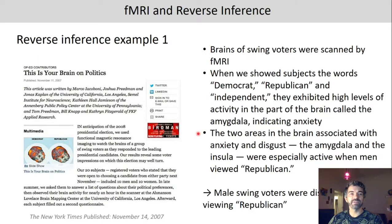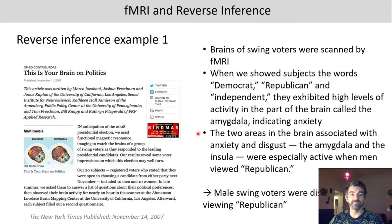I want to give two examples showing why this can be problematic. In one study, brains of swing voters were scanned using fMRI. Researchers found that when subjects were shown the words 'democrat,' 'republican,' or 'independent,' participants exhibited high levels of activity in the amygdala, which according to them indicated anxiety.